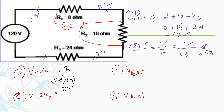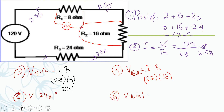Now for the sixteen-ohm resistor: V equals I times R. I is 2.5 ampere. I want to find the voltage only across the sixteen-ohm resistor, so 2.5 times sixteen equals forty volts.